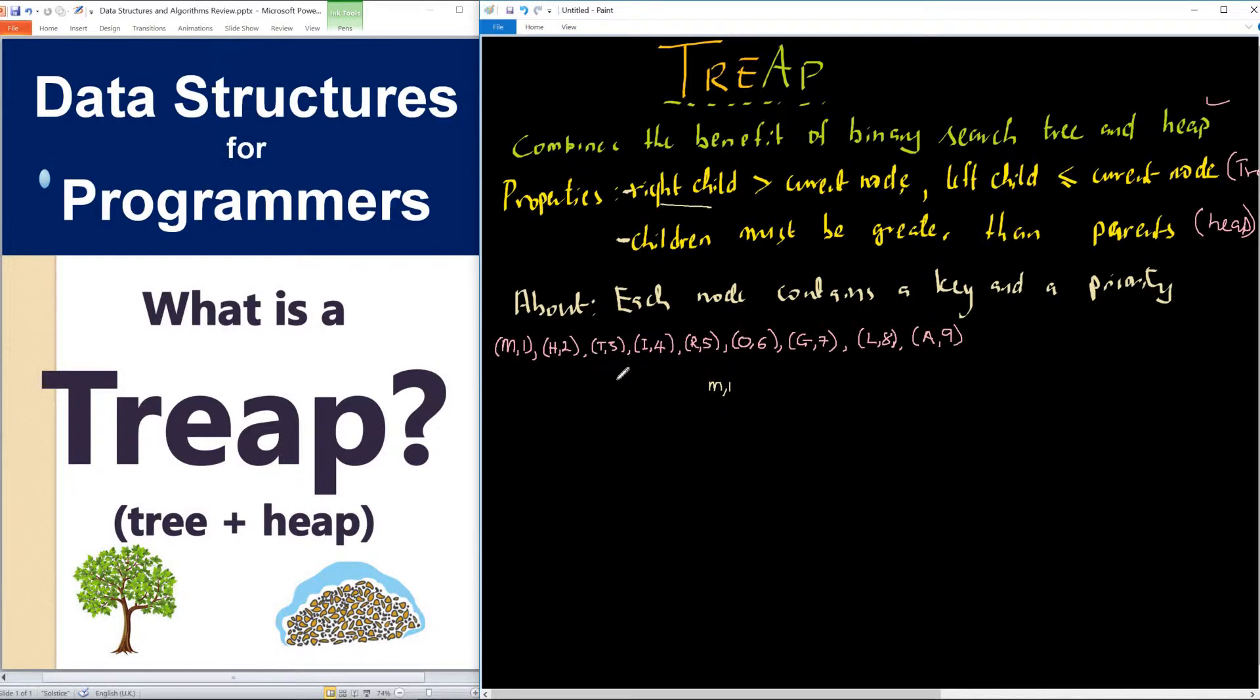Let's now try to insert H2. If we look at 2, 2 is less than 1, so it comes under, it could be anywhere. 2 must be greater than 1, meaning that the heap property is satisfied. Now, where do we insert H? H is actually less than M in alphabetical order, so it means that it has to go to the left. I'm going to draw to the left and insert H2 there.